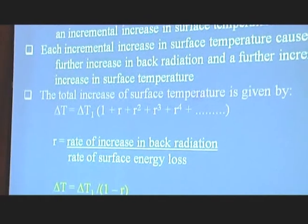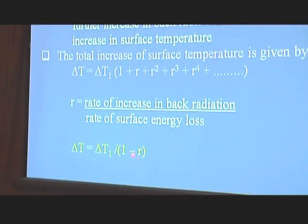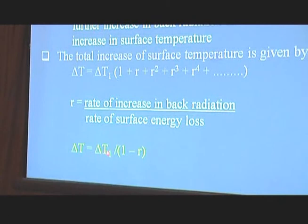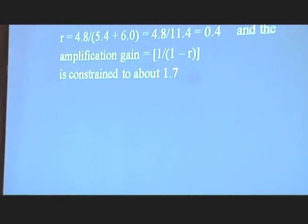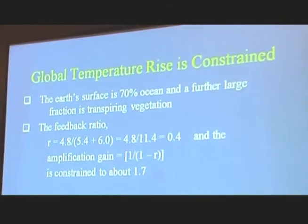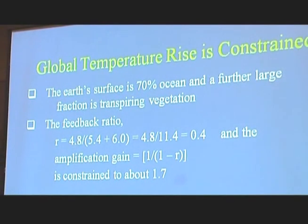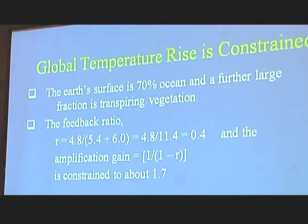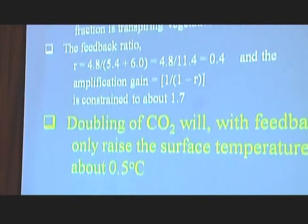And we find that DT equals DT1 over (1 minus R). The term (1 minus R) is quite important because it's the denominator. As R becomes larger towards 1, this becomes very small, and so the amplification becomes very large. If R is constrained to a small value, then the amplification is also constrained. What we find is that, reiterating — 70% of the surface is ocean and a further large fraction is transpiring vegetation — so evaporation is a very important component in the energy balance. The feedback ratio R is 0.4 over 11.4. The amplification is 1 over (1 minus R), which is 1.7. So we multiply the original 0.3 degrees by 1.7, and we get that doubling of CO2 will give us about 0.5 of a degree.